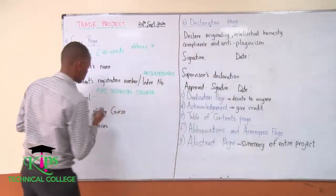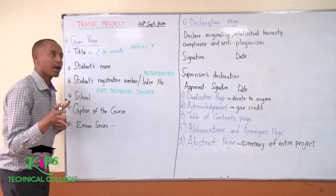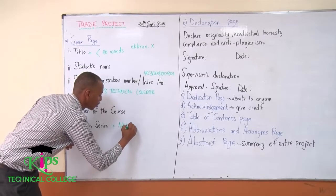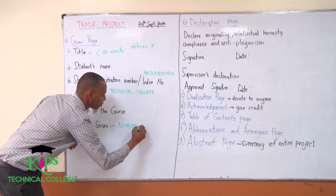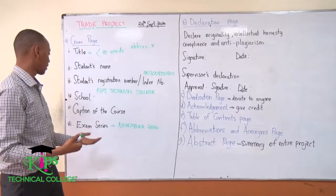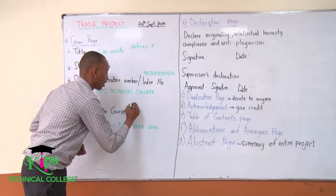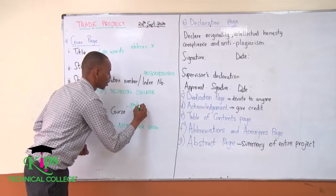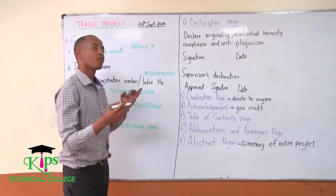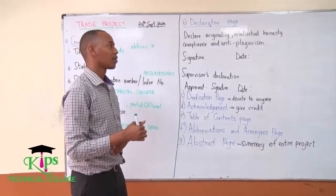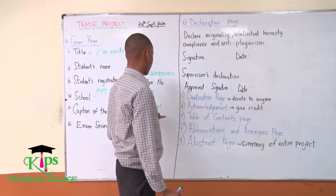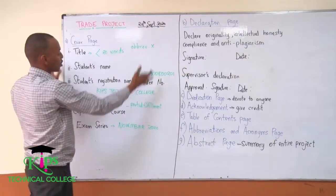Then finally, you have to talk about the exam series. In our case, if the exam is being done in November 2020, you have to write 'November 2020' under there — that's when the project will be submitted. The caption must address the partial fulfillment of the requirements for the award of a certificate or a diploma. That's the first page — the title page.